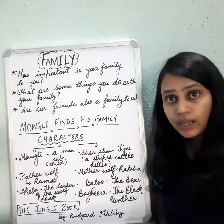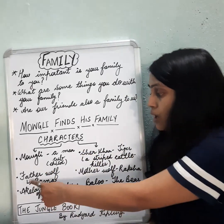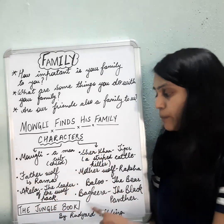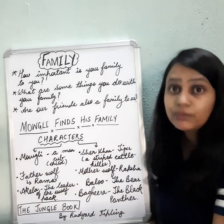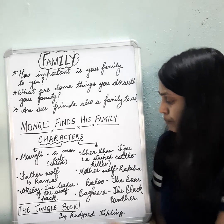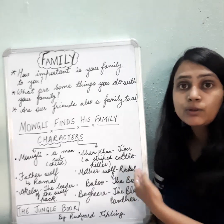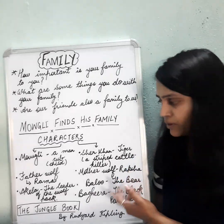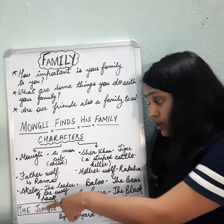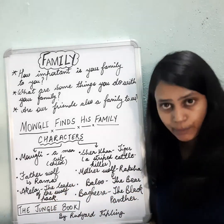The third main character of the story is the father wolf, whose name was Rama — which is not mentioned in your chapter, but you should definitely know about it. And then we have the mother wolf, whose name was Raksha. Then we have Akela, the leader of the wolf pack.